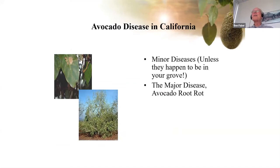Stress leads to disease — dis-ease. We're going to use avocado as a model because avocado is very sensitive to water and really shows off problems if it's not watered right. Things like lemons and mangoes are a lot tougher, but they are stressed — they just don't show it. They don't show their feelings the way avocados do.